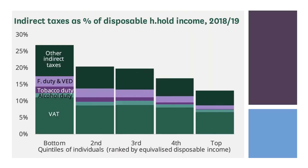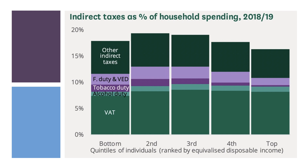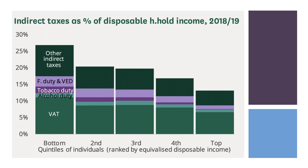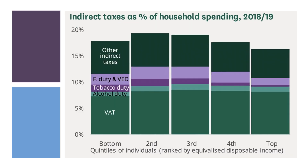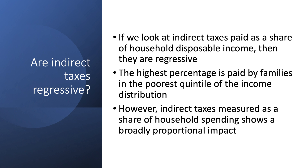If we go back a slide: that's as a share of income; that's as a share of spending. Share of income, share of spending. So indirect taxes are broadly speaking proportional, although things like the tax on tobacco and the tax on lottery tickets are probably quite strongly regressive. So if we look at indirect taxes as a share of income, they're regressive; as a share of spending, broadly proportional.